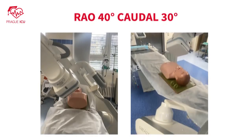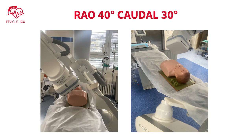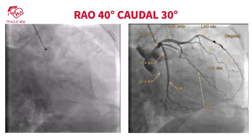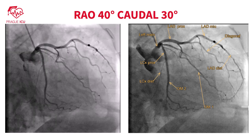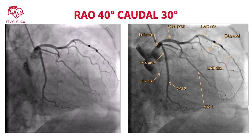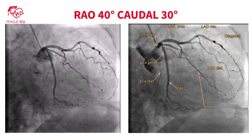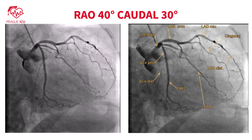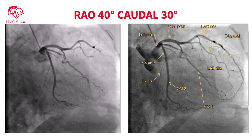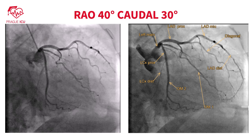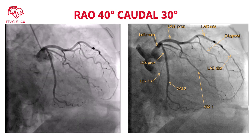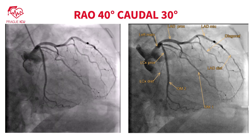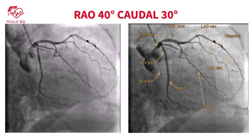Right anterior oblique 40 degrees caudal 30 degrees view is suitable for visualization of the proximal LAD and the proximal to mid circumflex with its branches. In this view, the first marginal branch can mimic the intermediate branch, but the spider view clearly demonstrates that this branch is arising from the left circumflex.